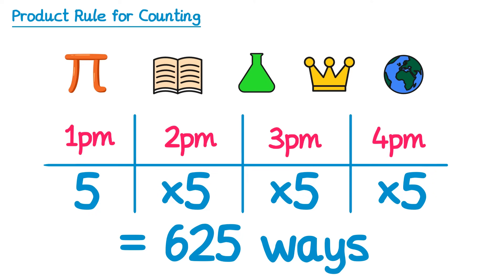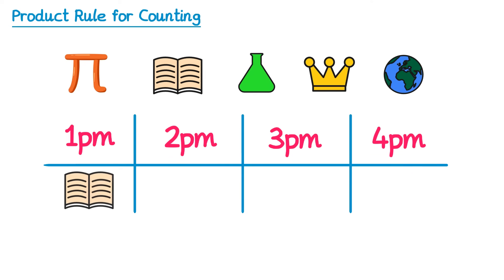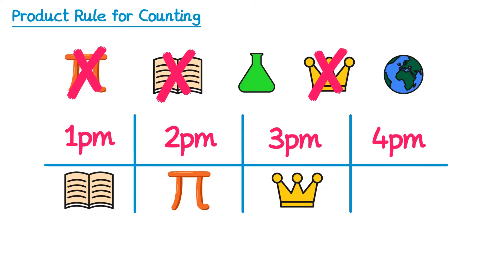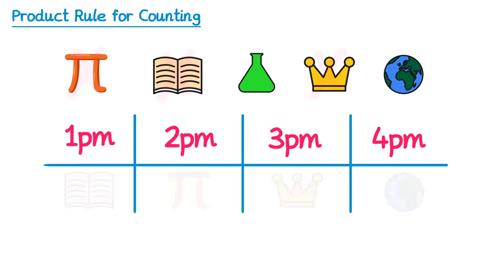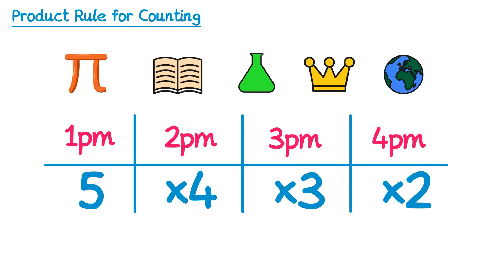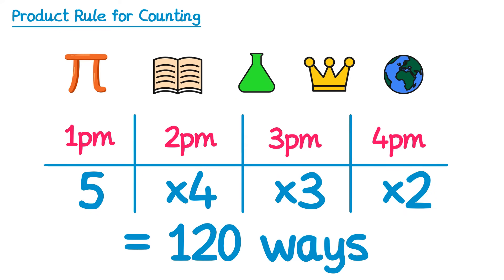Now what if we restricted it and said you can't revise the same subject more than once — no repetition. When you pick your first subject, let's say English, we need to cross it out. For the second subject we now have four choices, not five. Let's say we choose maths — cross that out, and then there are only three choices left. Let's say we pick history, cross that out, and the final subject has only two choices. So it's five times four times three times two, which gives you only 120 possible ways.